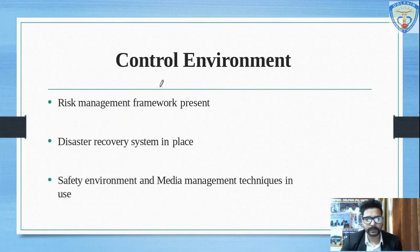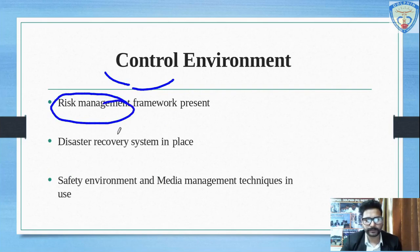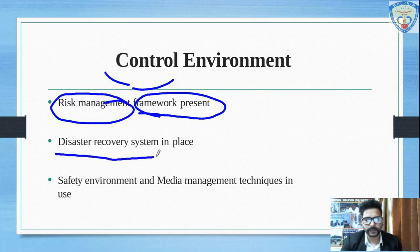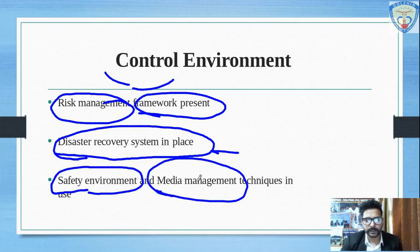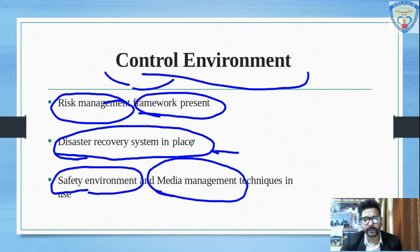The second heading is the control environment. The control environment consists of risk management within a framework that is present in an organization. It also includes a disaster recovery system that has to be in place within the organization, as well as safety environment and media management techniques that are to be strictly followed so that the internal as well as external environment are properly assessed.